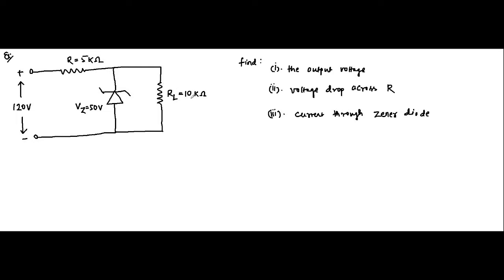The series resistance is 5 kilohms and the load resistance is 10 kilohms. This is a standard zener diode circuit. Our objectives are to find: the output voltage across the load resistance, the voltage drop across the series resistor, and the current flowing through the zener diode.